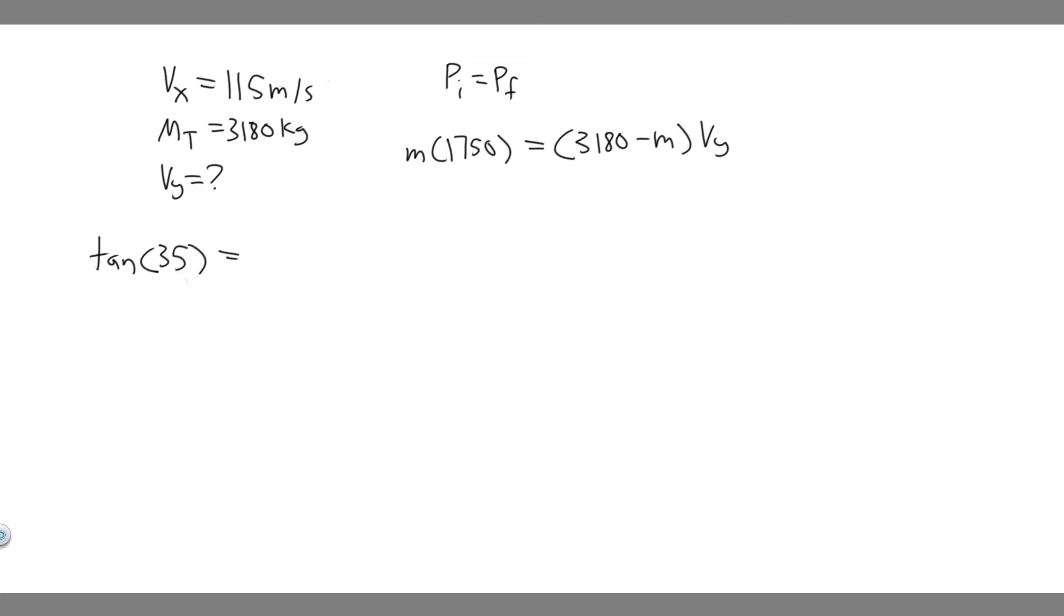It's equal to y over x. But keep in mind the x is 115. So if we want to solve for y, which is what we need - the velocity in the y - we just have to multiply both sides by 115. And that's going to give us the velocity in the y. Because usually you find the angle by doing the arc tangent of v over y, but since we actually have the angle, we can solve for v sub y. So this is going to be v sub y, just 115 times the tangent of 35.